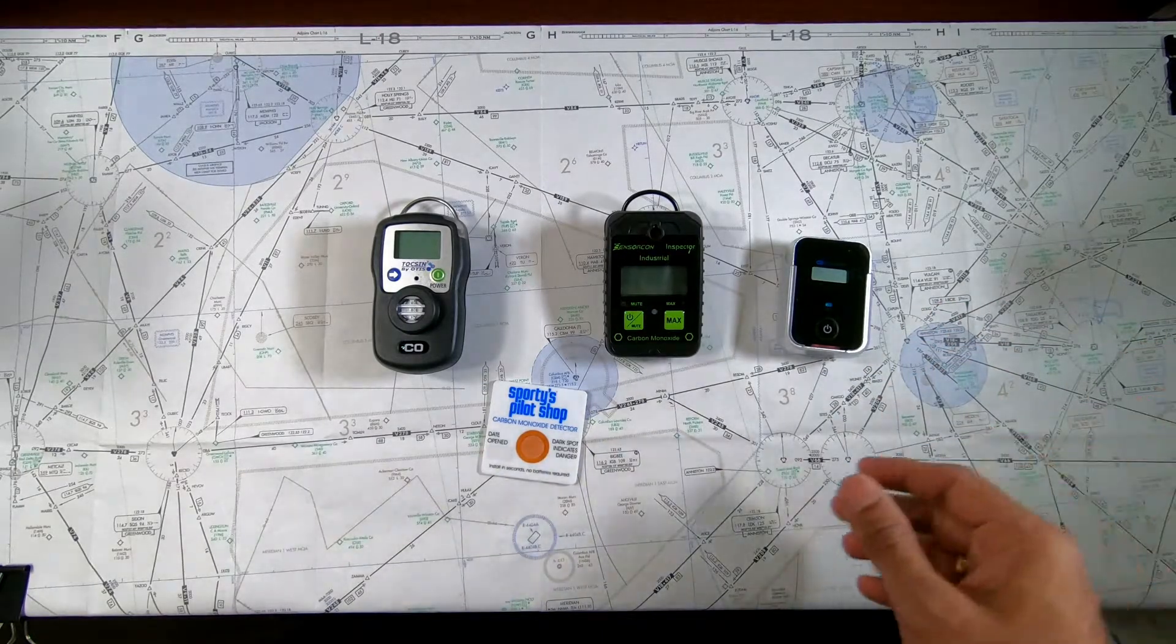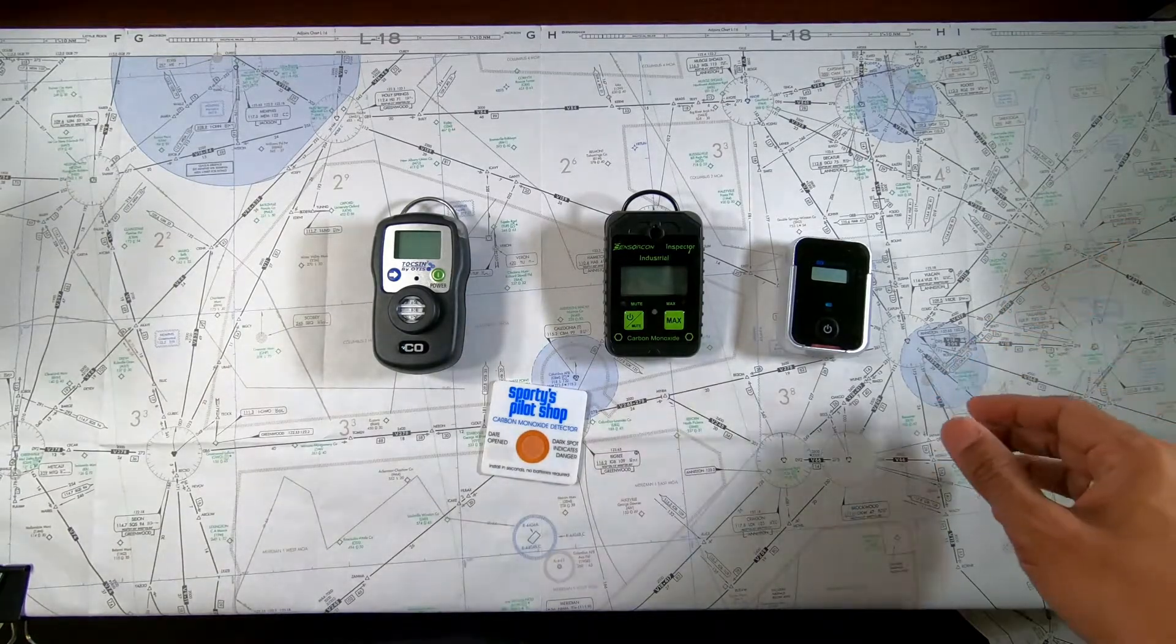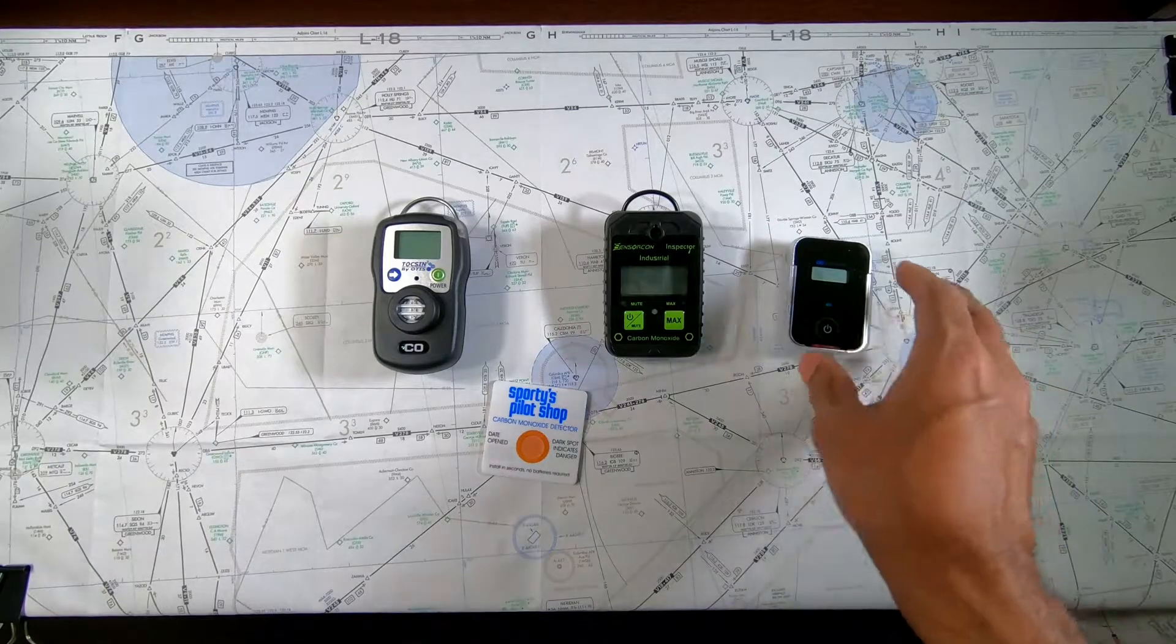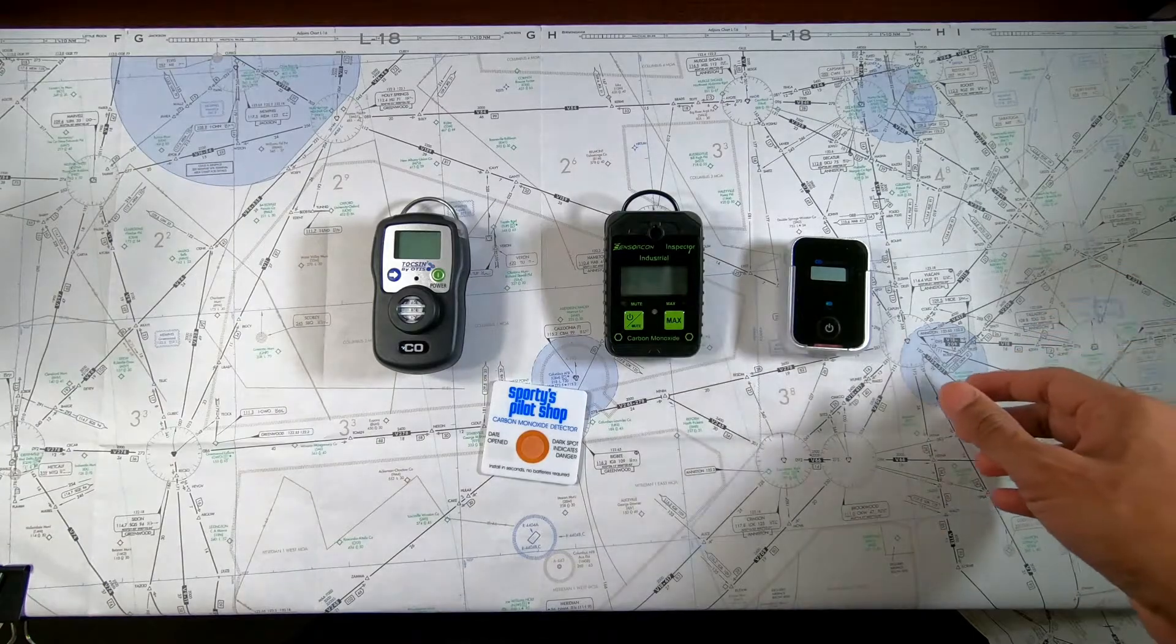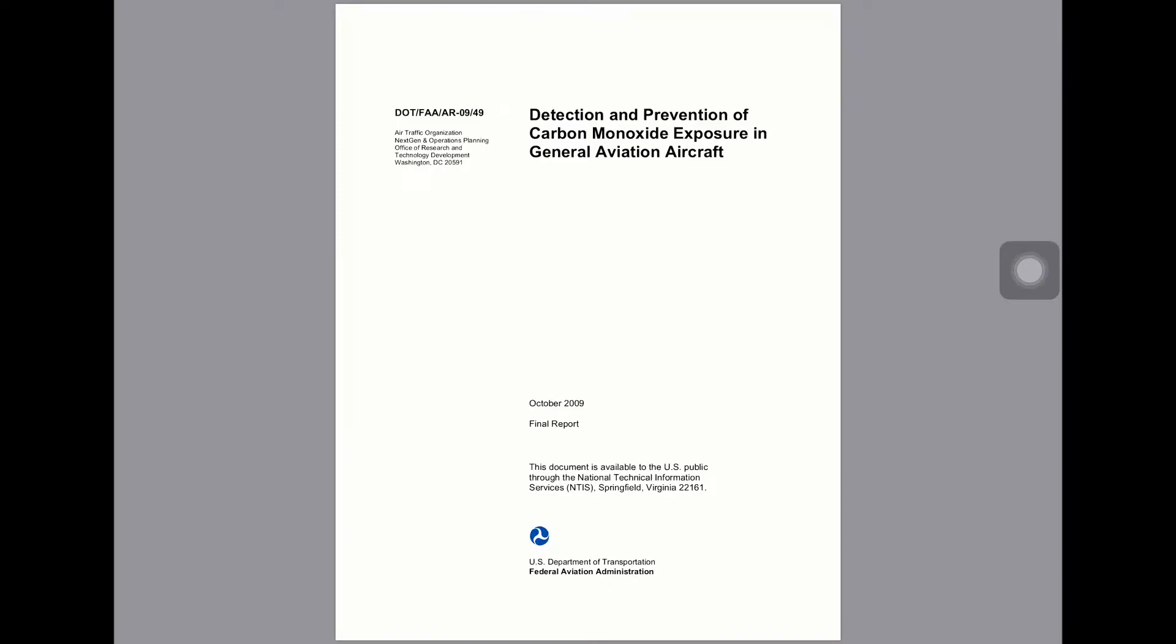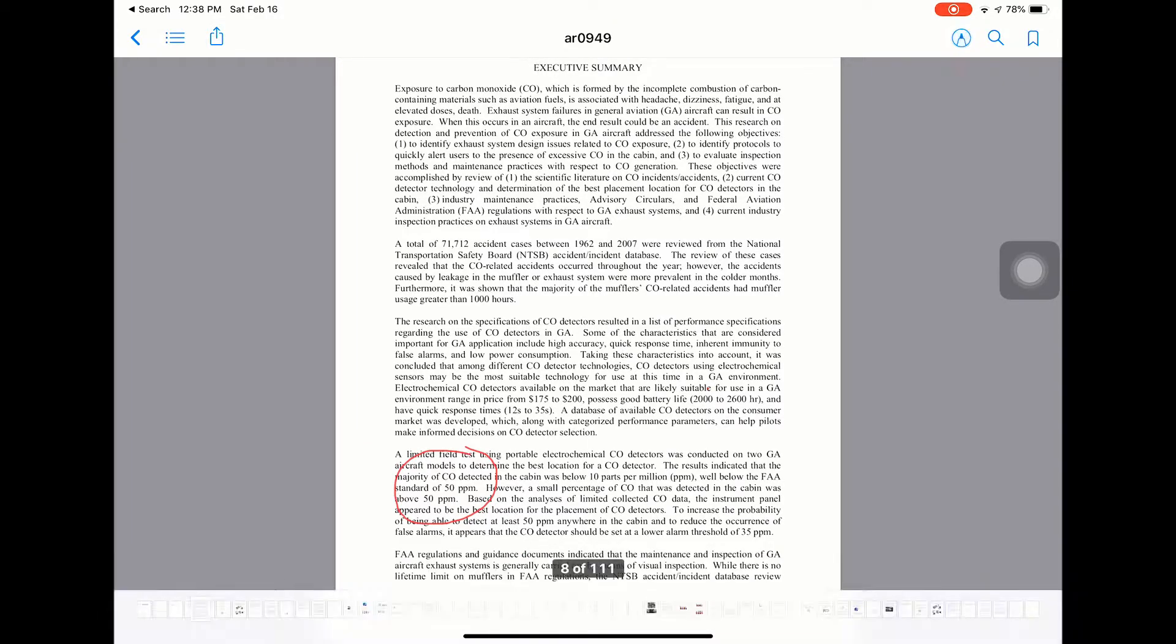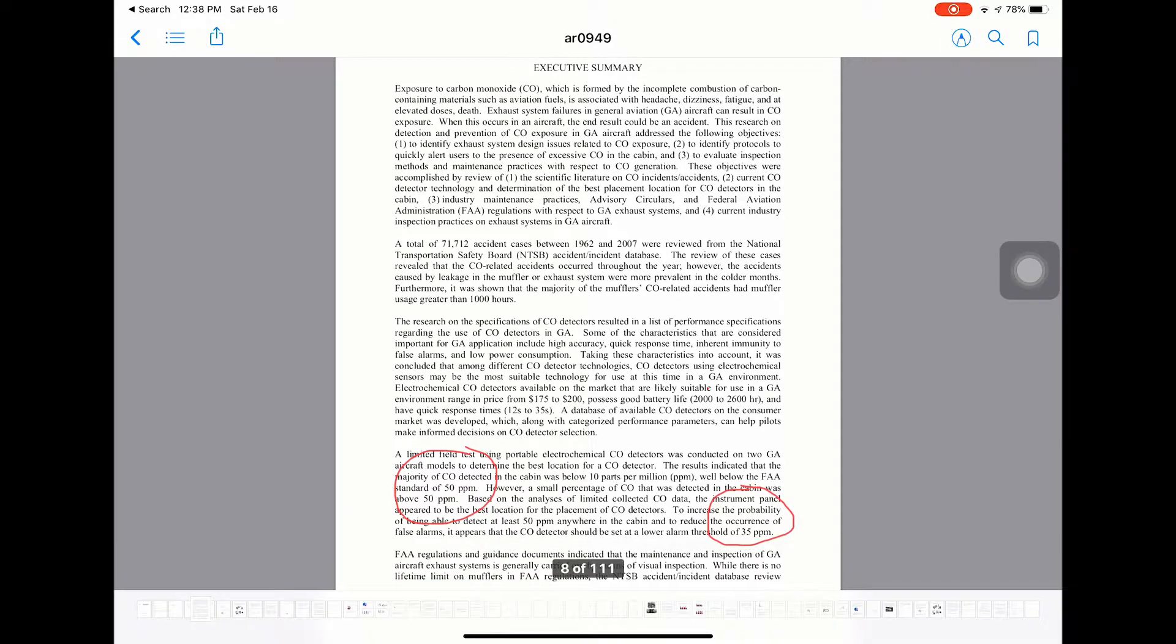So as a pilot, I want a CO detector to be sensitive and responsive to low concentration. It should also be able to alert me with audio and visual alerts if CO concentration exceeds certain thresholds. According to an FAA document titled Detection and Prevention of Carbon Monoxide Exposure in General Aviation Aircraft, published in 2009, the permissible exposure level or PEL for carbon monoxide is 50 parts per million. However, the document also states that 35 parts per million is a recommended level.